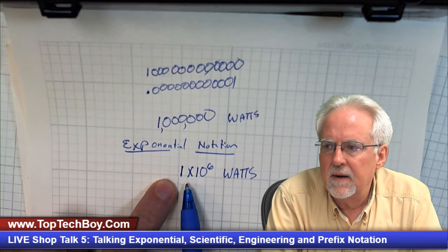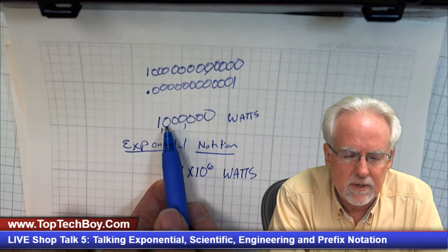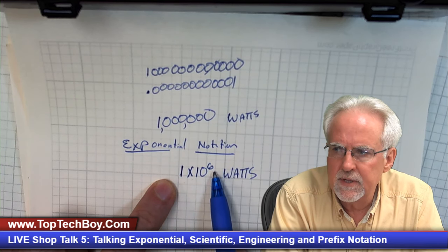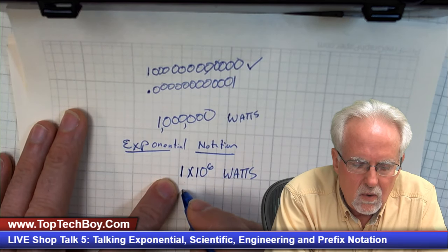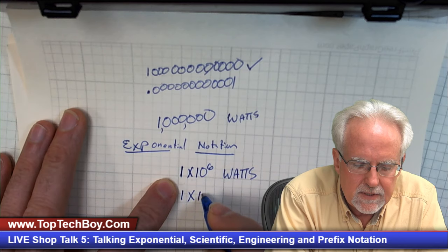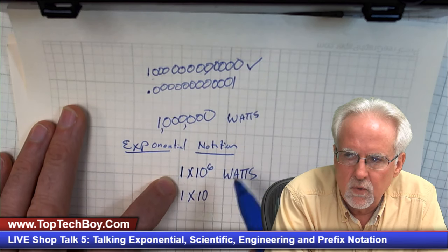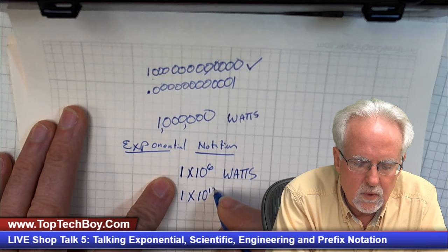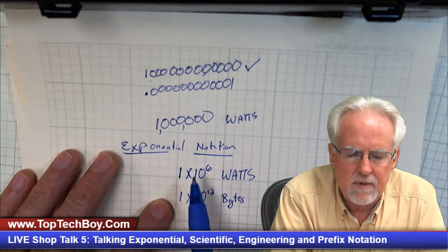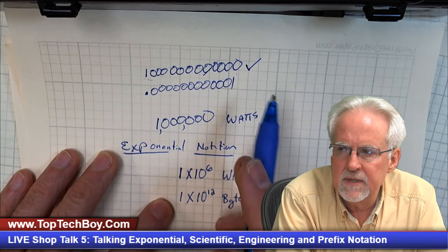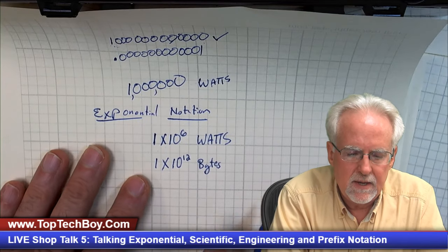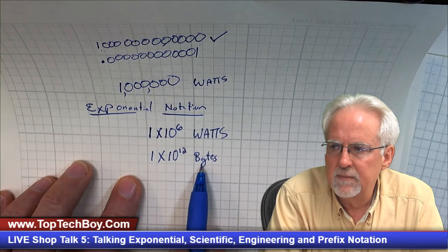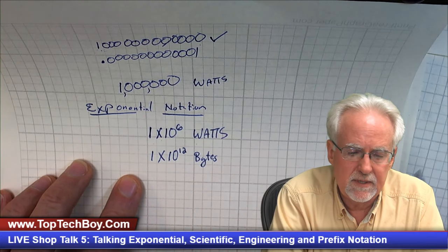I can write this without making a mistake because all of this nonsense is encapsulated into that six. One trillion bytes would be one times ten to the twelfth bytes. You see, if I write this down, I'm not going to make a mistake — but if I write out all those zeros over and over to work through a problem, I'm going to make a mistake. So the units are the same: one times ten to the twelfth bytes, one times ten to the sixth watts.